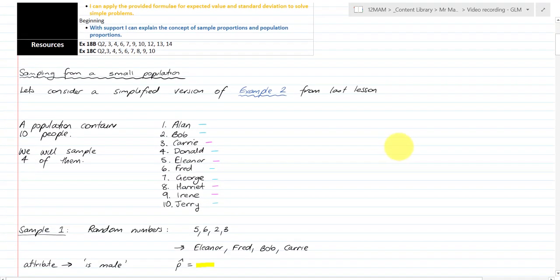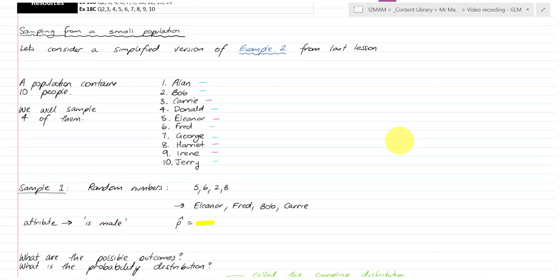Let's consider the simplified version of example 2 from last lesson. In example 2 last lesson we talked about a list of 26 students in a made up class of mine and I've just taken the top 10 of these students, students from A to J, and we're going to sample 4 of them.